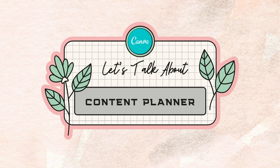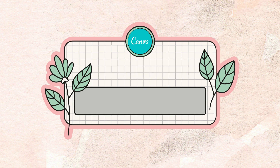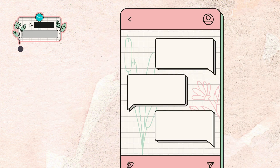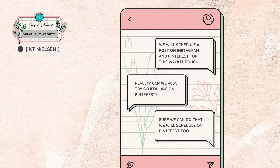Let's talk about Canva's Content Planner and how you can incorporate it into your social media marketing workflow. The Content Planner works on the following platforms: Facebook group and page, LinkedIn profile and page, Twitter, Pinterest, Tumblr, Slack, and of course the latest addition, the Instagram business account. We will focus on Instagram and Pinterest scheduling for this walkthrough.